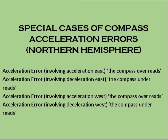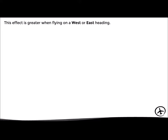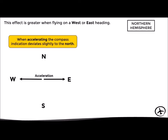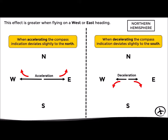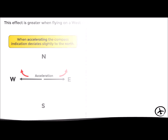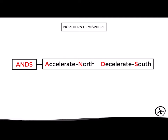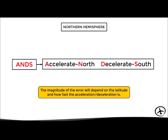Special cases of compass acceleration errors in the northern hemisphere: when there is acceleration to the east, the compass over-reads. This effect is greater when flying on a west or east heading. In the northern hemisphere, when the aircraft accelerates, the compass indication deviates slightly to the north; when the aircraft decelerates, the compass indication deviates slightly to the south. We can remember this with the acronym ANDS: Accelerate North, Decelerate South. The magnitude of acceleration error depends on latitude and the rate of acceleration or deceleration.